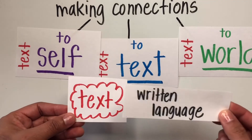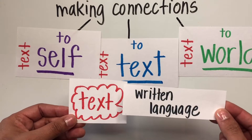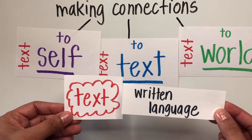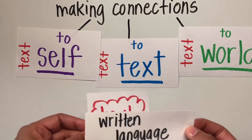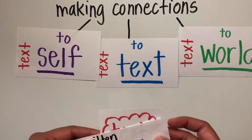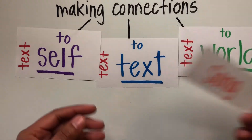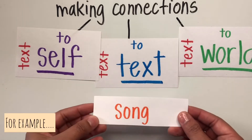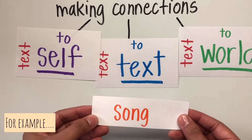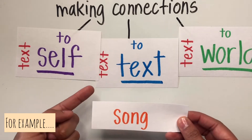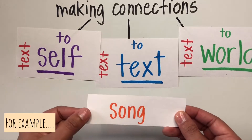When I talk about the text, I'm talking about anything that has a written language — a book, a newspaper, a passage, a story, anything that you can read. For example, I can take a song and call it the text because it has lyrics.